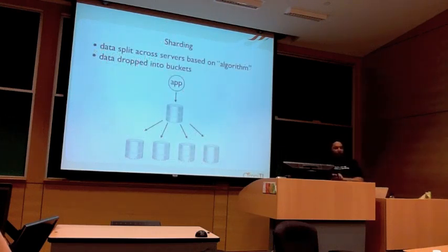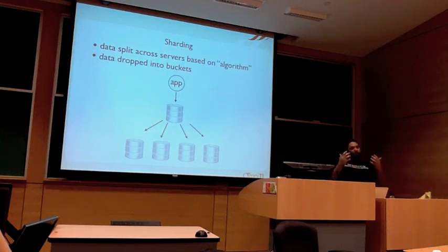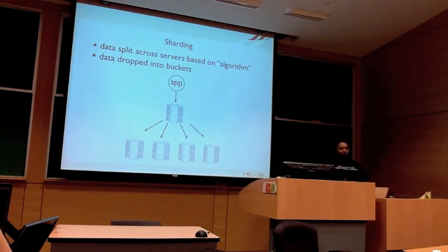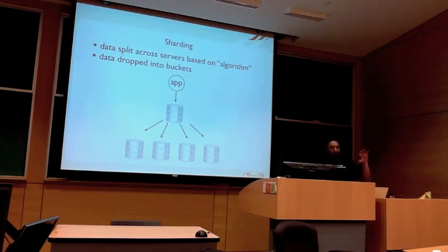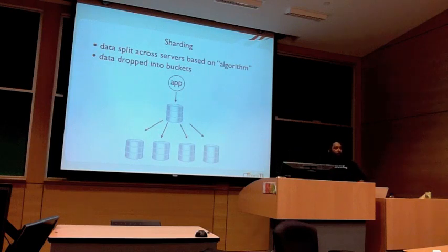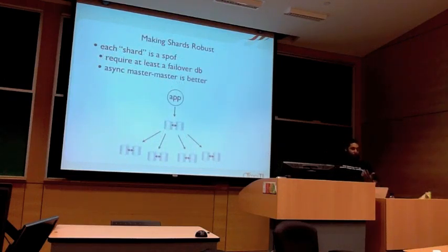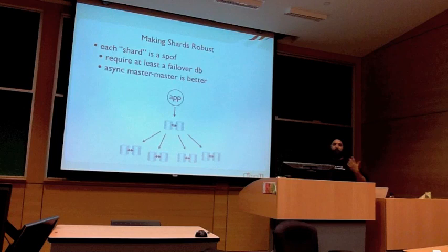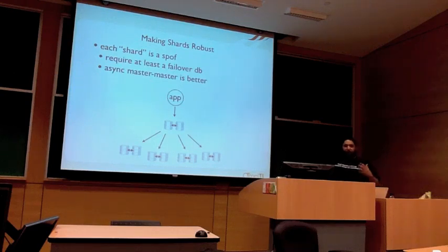Going back to the architecture overview — your app talks to a main bucket which talks out to individual buckets. One thing to be aware of is that if you actually build it with single databases in all these places, that really isn't good enough to achieve maximum uptime. Each shard is sort of a single point of failure for portions of the system. You want to have at least a failover database for all the individual shards — a lot of people don't realize that idea.